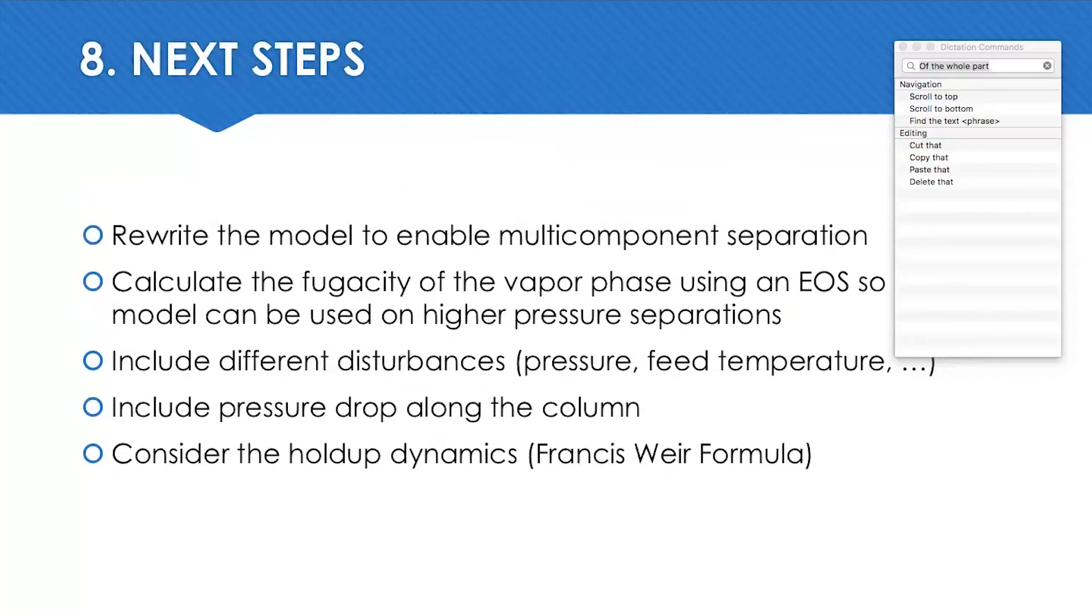The next steps for this research would be to implement a model for multicomponent separation, calculate the fugacity of the vapor phase using an equation of state so the model can be used on higher pressure separations, to also include different disturbances, consider pressure drops along the column, and also the holdup dynamics in the trays and also in the condenser and the reboiler.